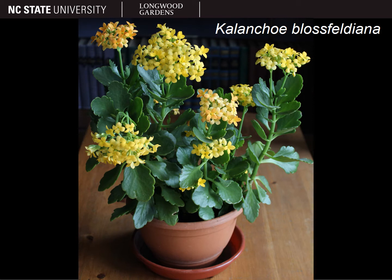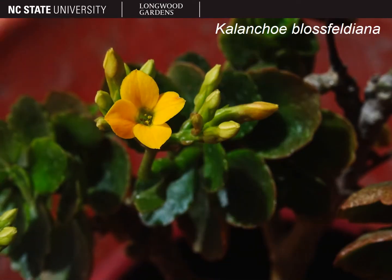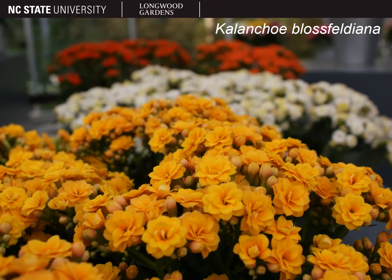Kalanchoe blossfeldiana is popular because of its large umbels of flowers, which are in the carotenoid pigments — they will typically be yellow, orange, red, pink, or white. The individual flowers are salverform and have four petals. There are double-flowered cultivars as well, which are quite attractive.